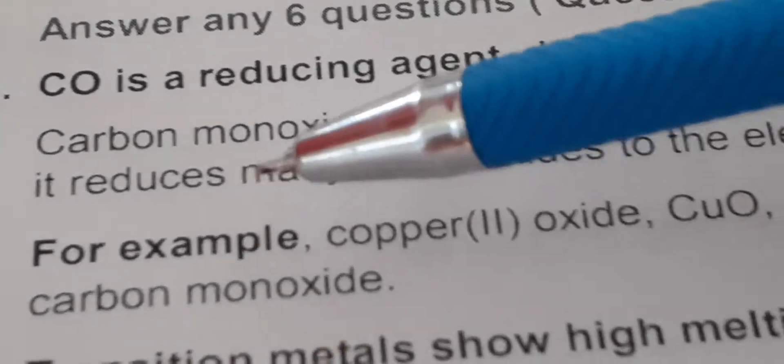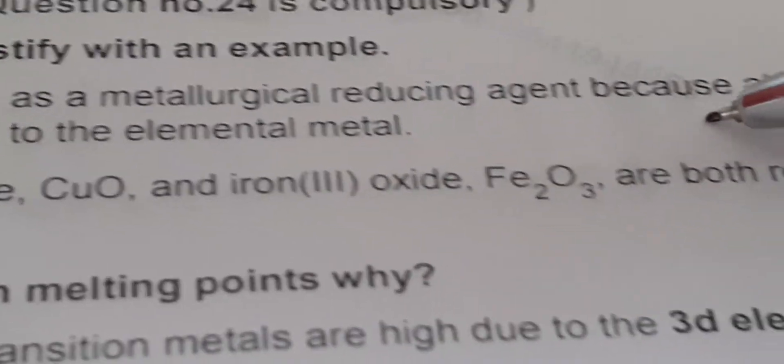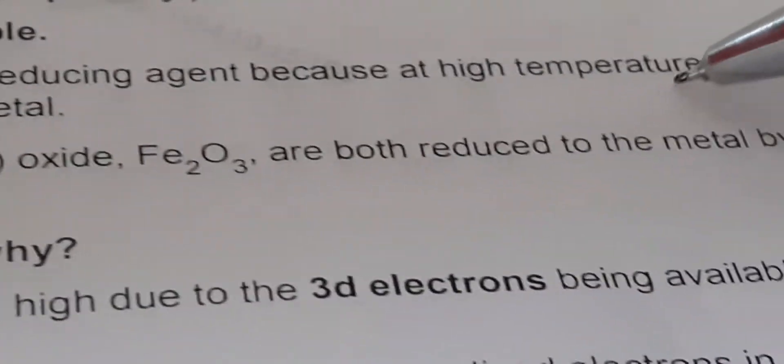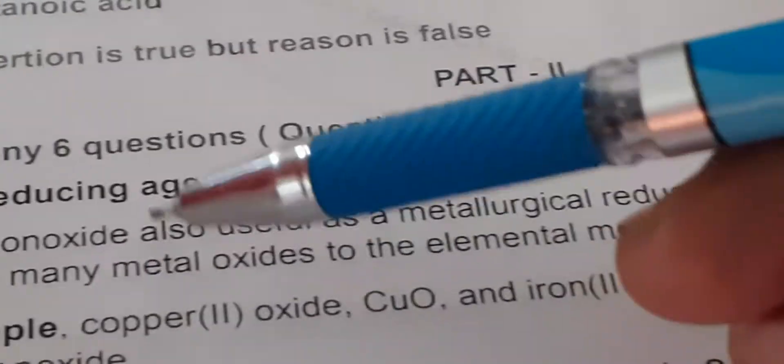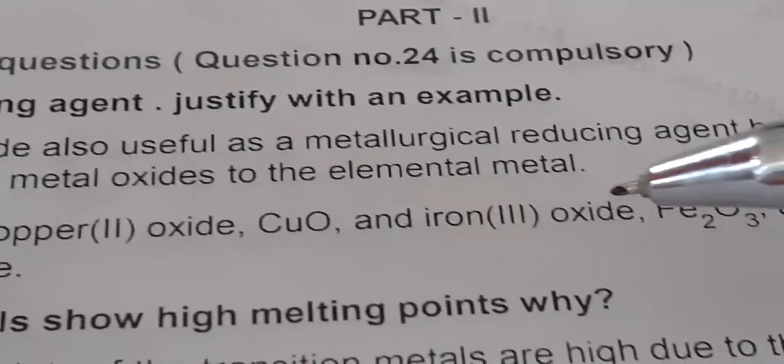Look at the answer: Carbon Monoxide is also useful as a Metallurgical Reducing Agent. Because at High Temperatures, it reduces many Metal Oxides to Elemental Metal.